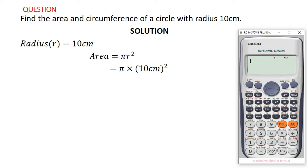To find π on the calculator, press Shift, then press the button that has 'times 10 to the power x' on it. If you look on top of that button you will see the π symbol. That button is to the left of the Ans button. Press Shift then press that button and you will get π. Then multiply by 10 squared.